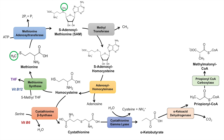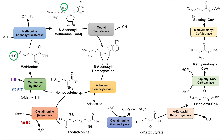Propionyl-CoA can then be acted on by propionyl-CoA carboxylase to form methylmalonyl-CoA. This process requires ATP, which gets hydrolyzed to ADP, leading to formation of methylmalonyl-CoA. Methylmalonyl-CoA can then be acted on by the enzyme methylmalonyl-CoA mutase, which acts on methylmalonyl-CoA to form succinyl-CoA.